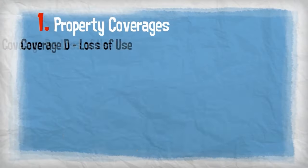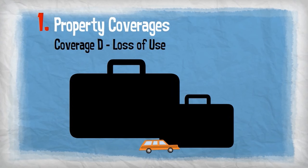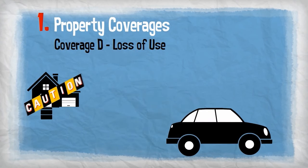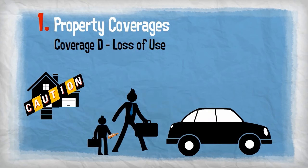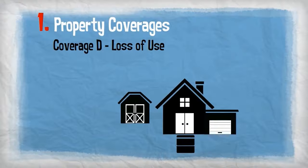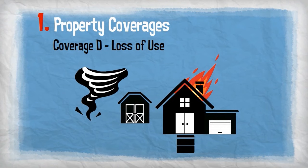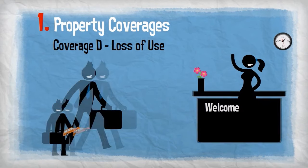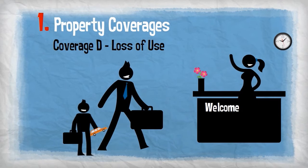Coverage D, loss of use, provides coverage for your additional living expenses when you have lost use of your home. For example, if you have to vacate your home due to damage from a covered loss, such as a fire or tornado, this coverage will pay for the additional cost of a hotel or other temporary living expenses you would not normally have until the damage to your home can be repaired.